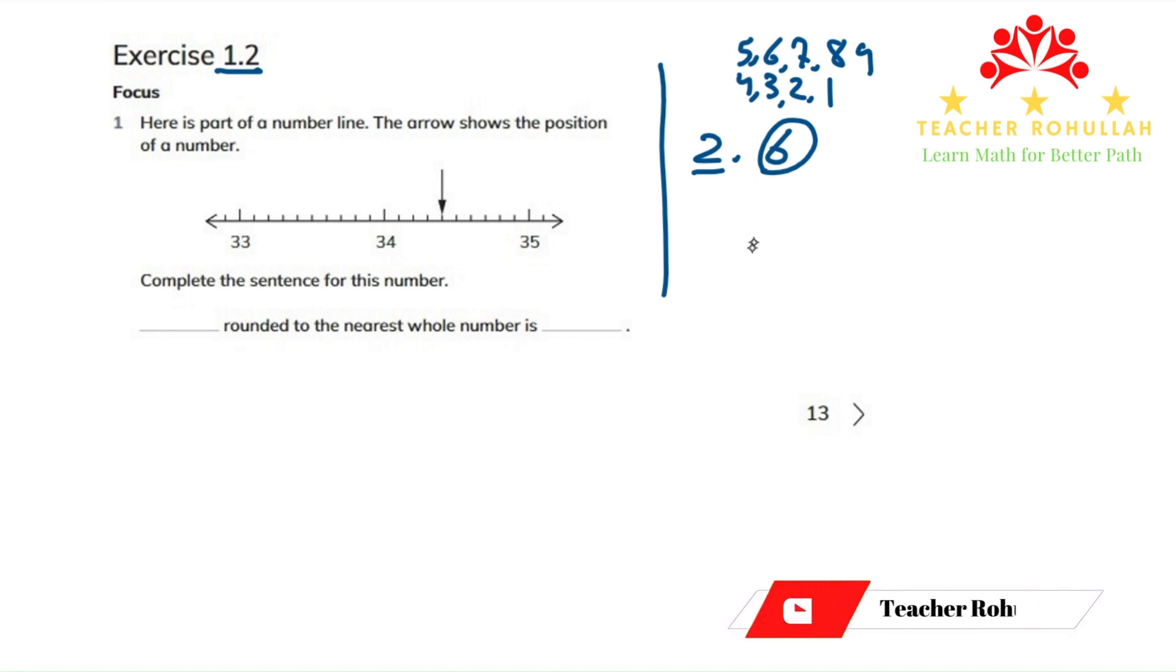How can we show this number on the number line? Let me draw a number line. Suppose this number starts with 2, this point is 3, and continuing, this point is 4.